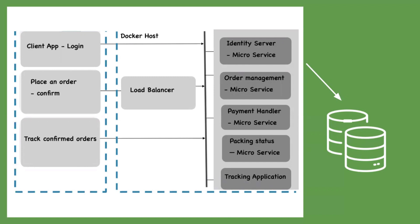Also, back-end applications should only accept calls which are from the UI application — so what rules need to be injected into the firewalls? In the same way, the DB should accept connection requests only from back-end applications — then how to alter IP table rules accordingly? Or can we achieve this without altering IPtables itself? To get answers for all these questions, first we have to get familiar with Docker networking terminology.